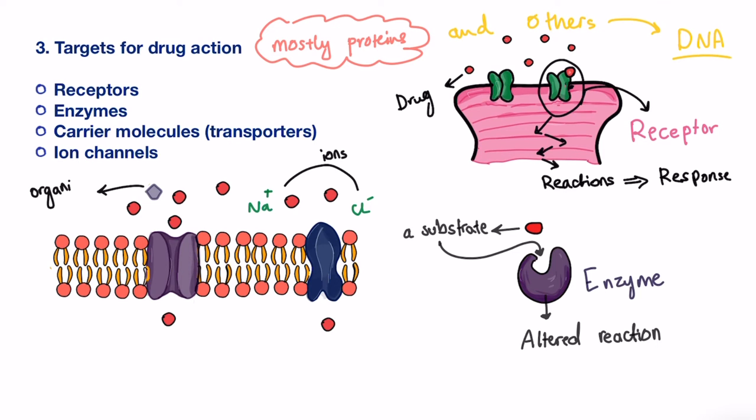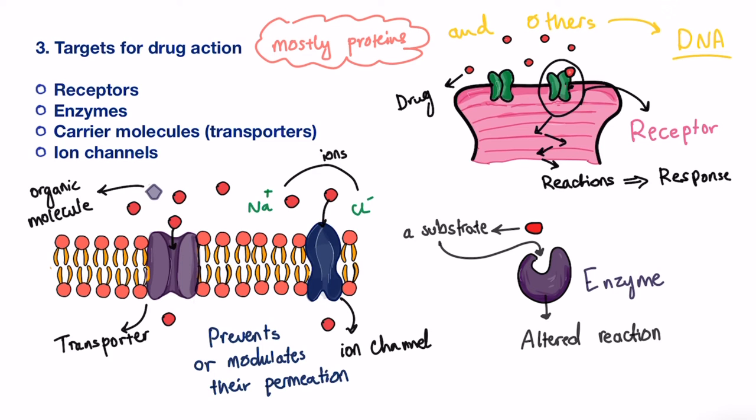Apart from this, the movement of ions and small organic molecules across the lipid membrane is generally carried out with the help of transporters or ion channels. So a drug that binds to these targets can prevent or modulate the permeation of different ions and substances that the cell requires.